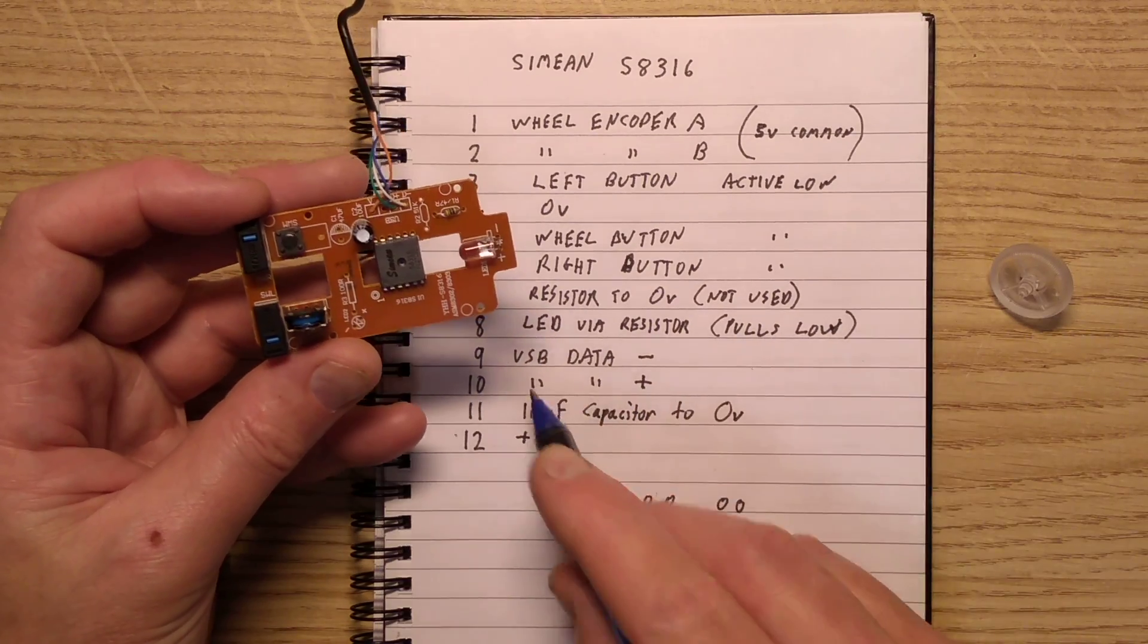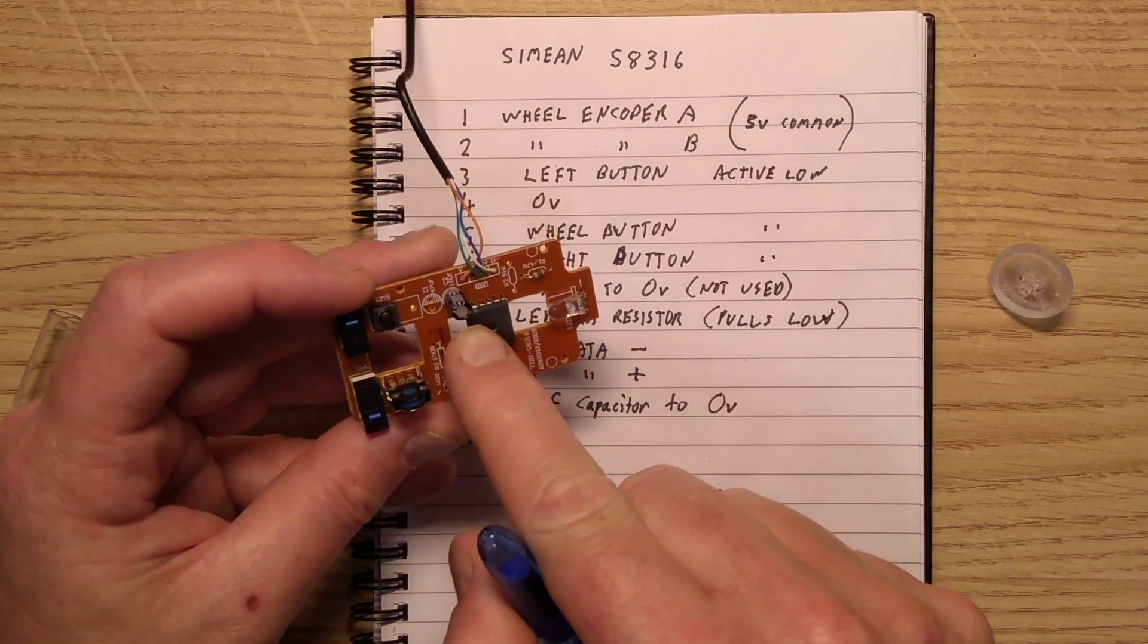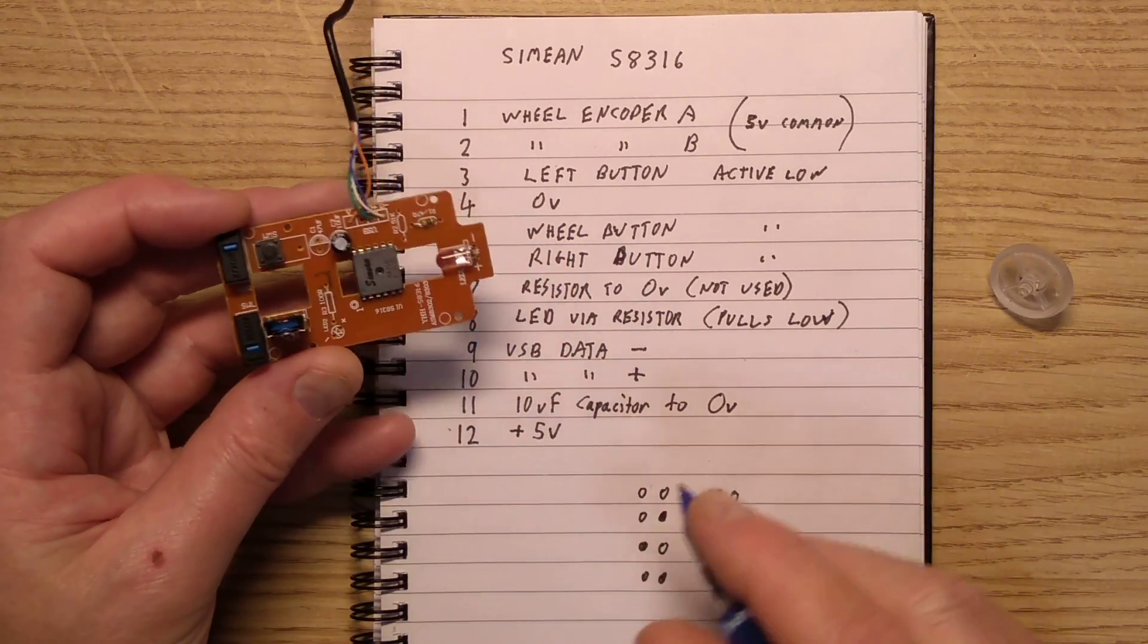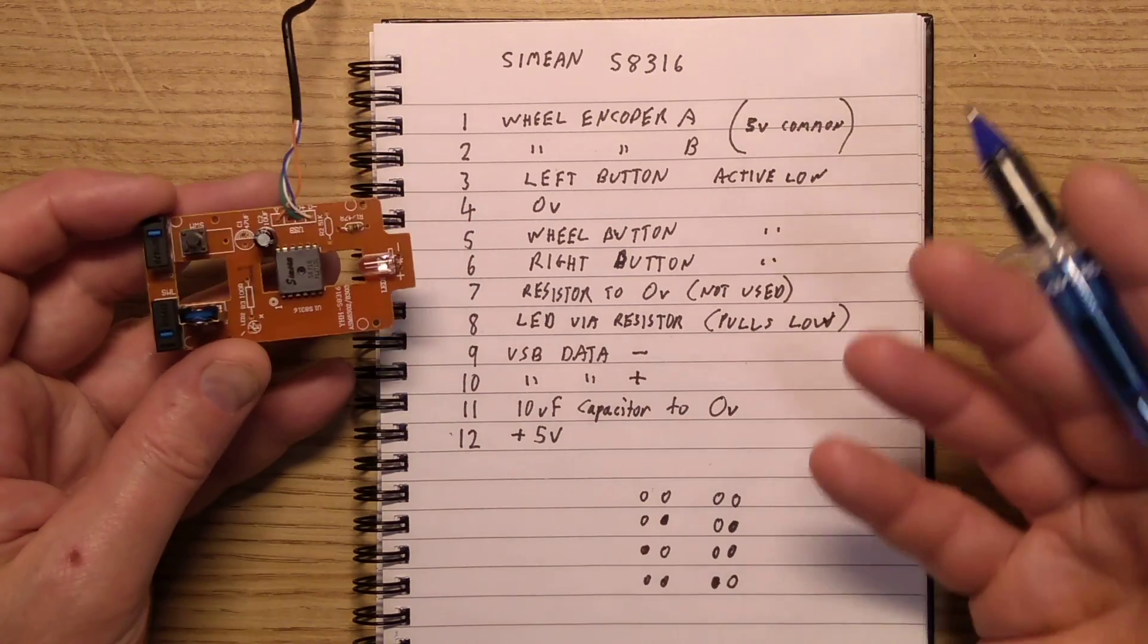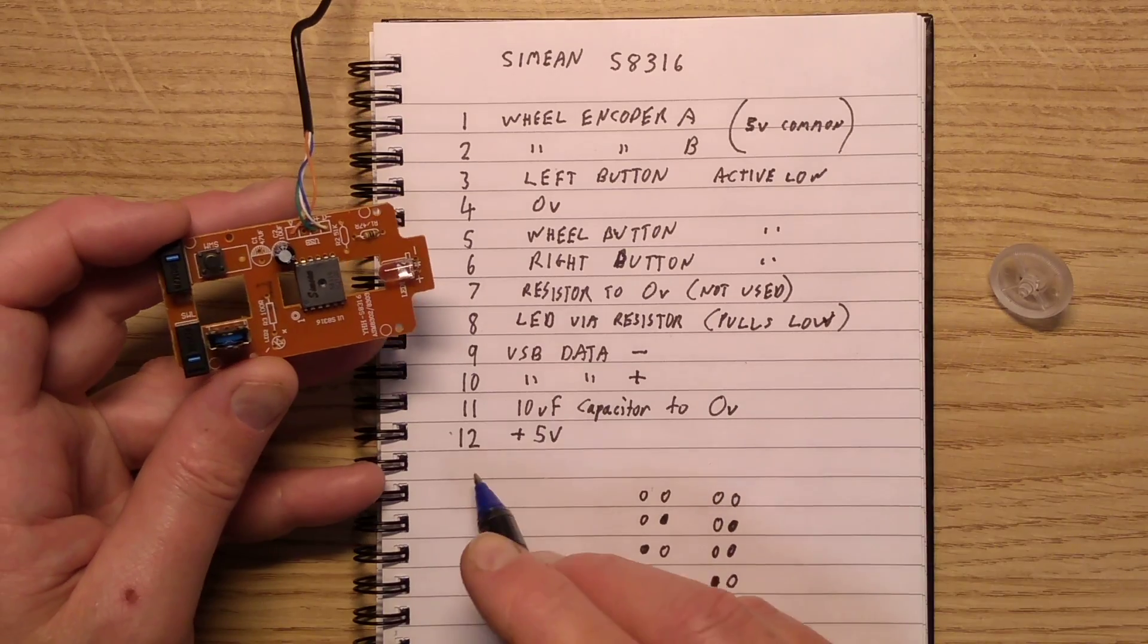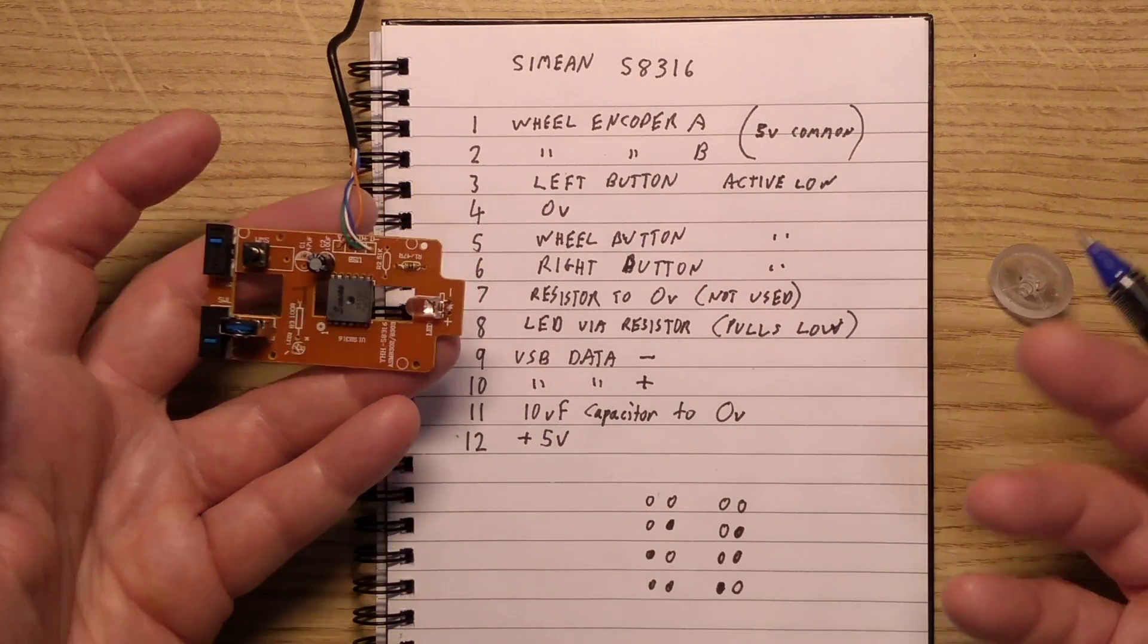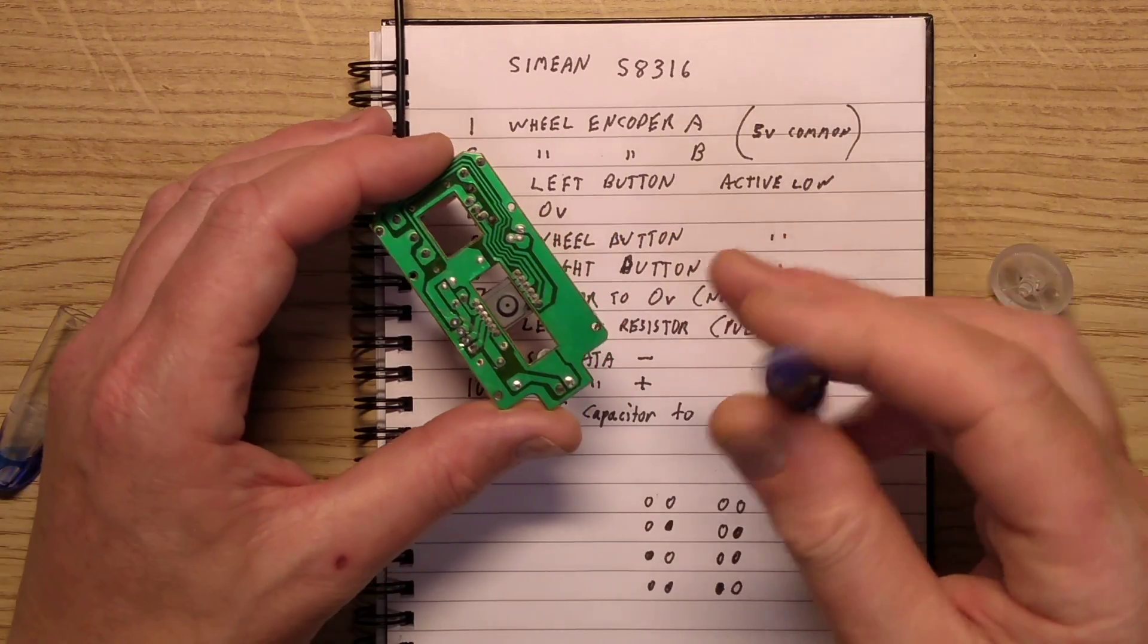The LED via resistor, we've got the USB data negative, USB data positive, a 10 microfarad capacitor to the zero volt rail from pin 11, which must be an internal power supply or just a stable reference, and then pin 12 is the 5 volt supply. That pretty much sums up but what's actually incredible is this chip here.